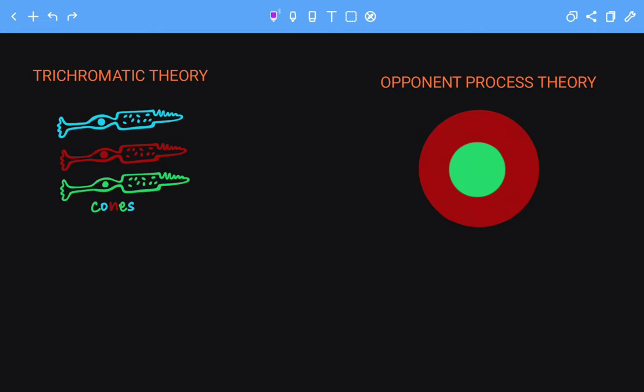Let's start with the trichromatic theory. If we break this word down, trichromatic, tri is three and chroma is color. As the name suggests, this theory revolves around three colors.